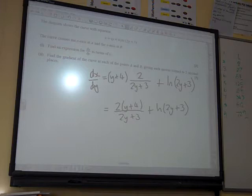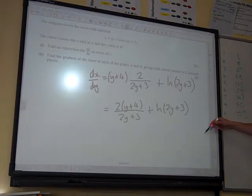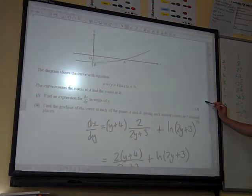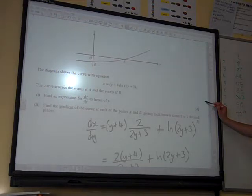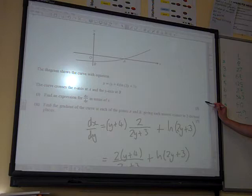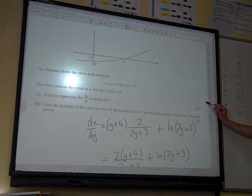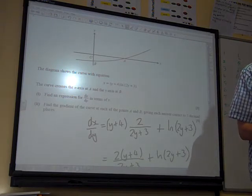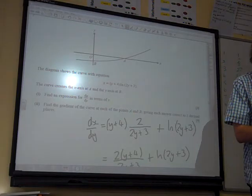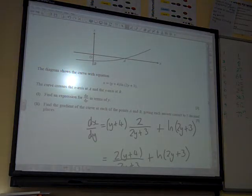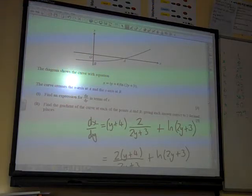Find the gradient of the curve at each of the points A and B, giving each answer correct to two decimal places. We don't have coordinates for these. What coordinate do we need? We need the y values for A and B. We don't need the x values because x is in terms of y. A gradient is the rate of change of y with respect to x, so we're going to have to somehow turn this back into dy by dx. We're going to have to take the reciprocal at the end of this.